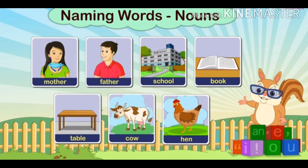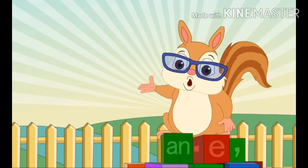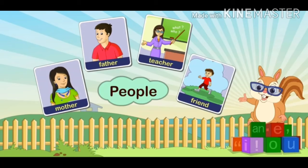As we have seen, words which have a name and a meaning are what we call naming words, or we call nouns. There are many people around us. We identify them with certain names. For example, mother, father, teacher, friends, etc. are the names of people. So, the noun can be a name given to a person.